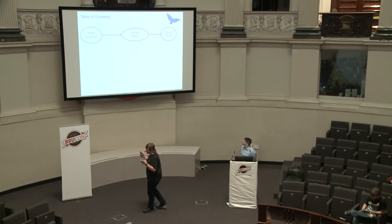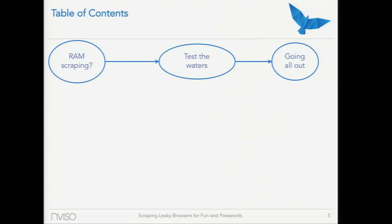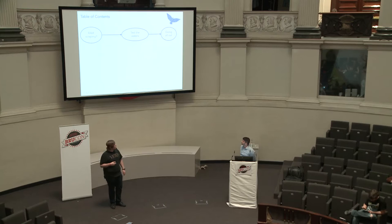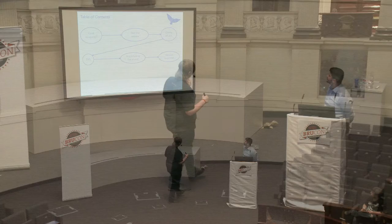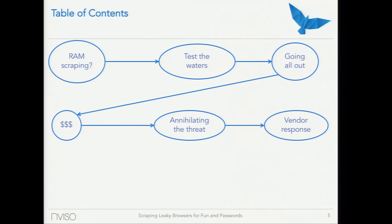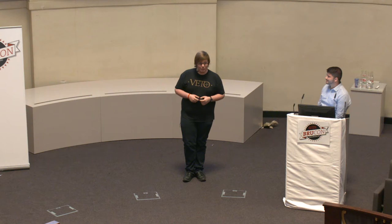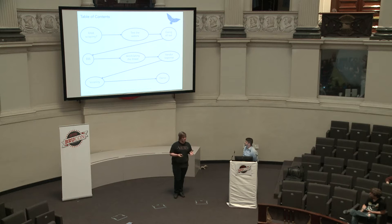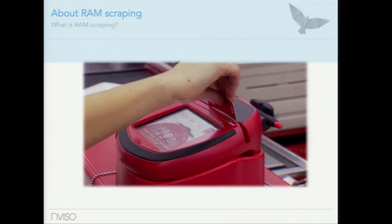Let's get to it. A quick overview: we'll start with what RAM scraping is and whether it's even a problem — what's the potential of a RAM scraper attacking you, what would it find? You'll see that RAM scrapers are indeed a big problem. After that, we'll look at the jackpot payload, some countermeasures. We've also reported this to the vendors of the three largest browsers, and they've responded. Finally, Adrian has written a Volatility plugin that will consistently and effectively find sensitive data in browser memory, and we'll give a demo.